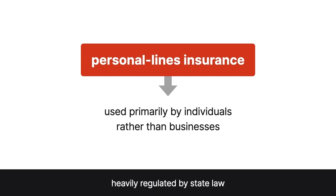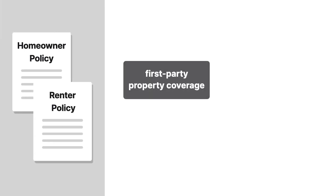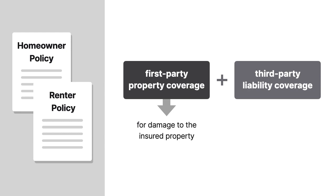They're also heavily regulated by state law, with many states requiring specific endorsements be included with all homeowners' policies issued in that state. Typically, homeowners' and renters' policies include both first-party property coverage for damage to the insured property and third-party liability coverage for certain claims made by third parties.